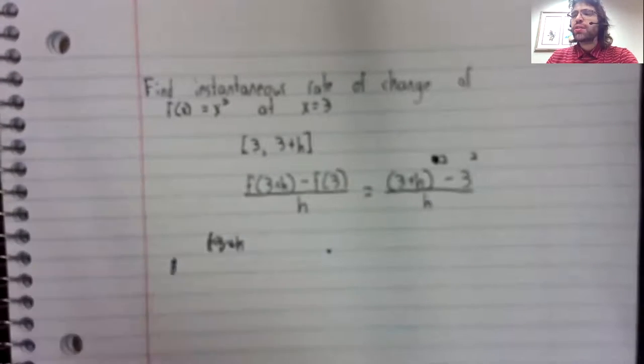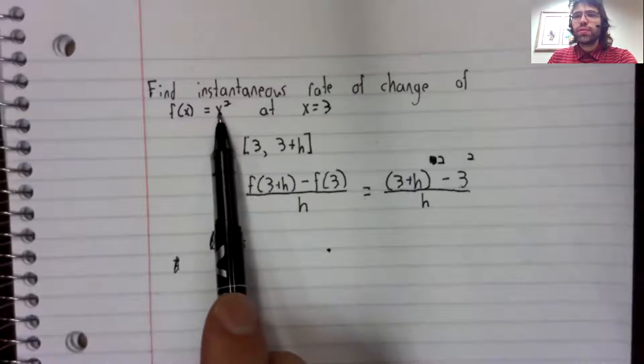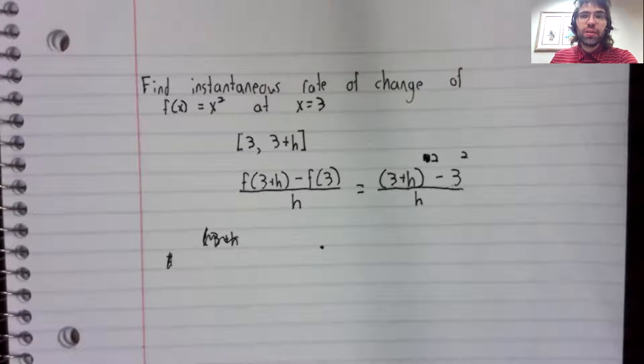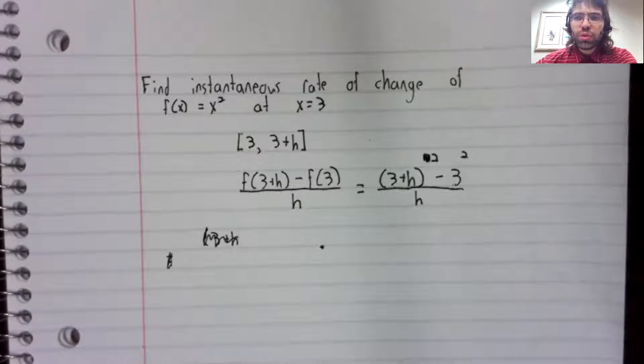Let's actually find an instantaneous rate of change. We'll look at x squared at x equals three, and we'll use the second formula.